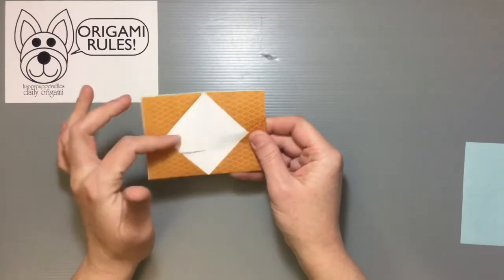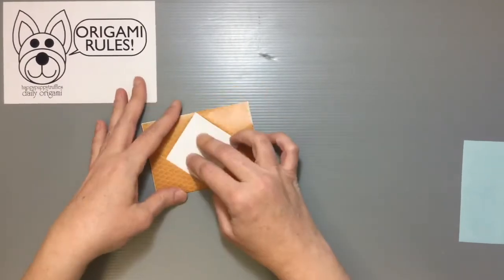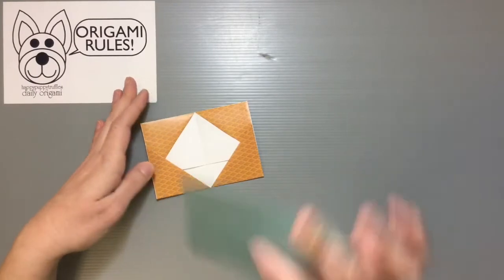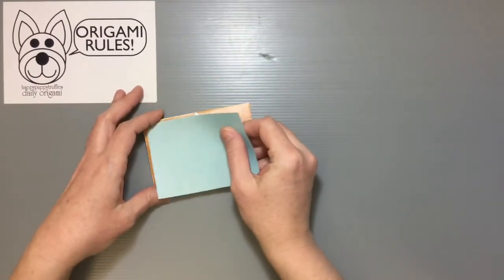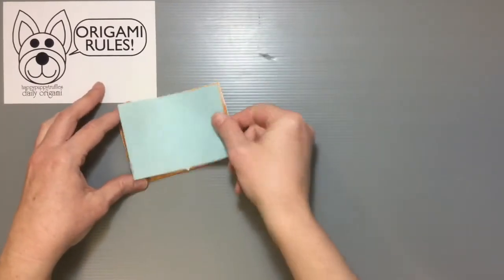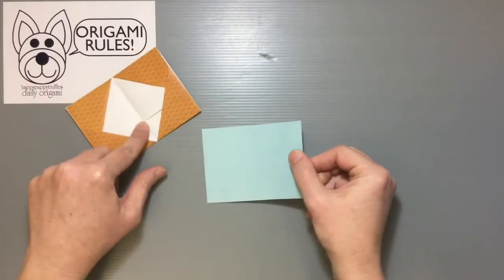If you're using this for like a nameplate or a photo and you already have something else to put in the middle, you don't need to use this other piece of paper. But if you do want to have it kind of look a little nicer, then this makes a nice insert to kind of cover up that crease.